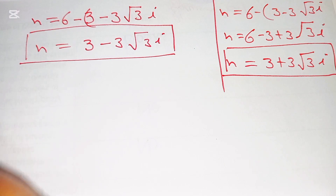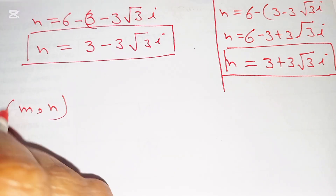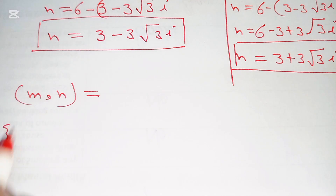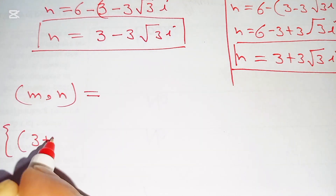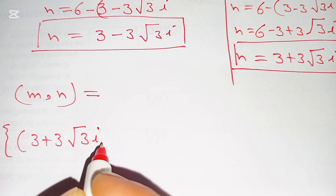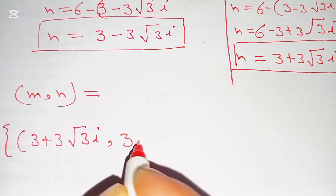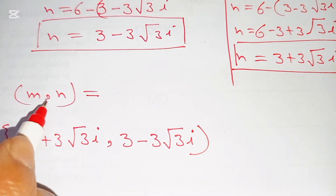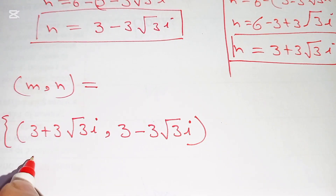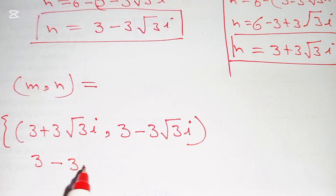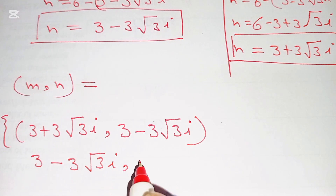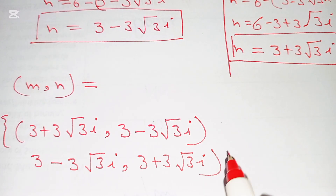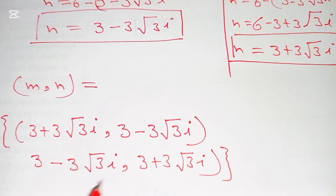So the values of m and n are: m equals 3 plus 3√3·i and n equals 3 minus 3√3·i, or m equals 3 minus 3√3·i and n equals 3 plus 3√3·i. These are our final answers.